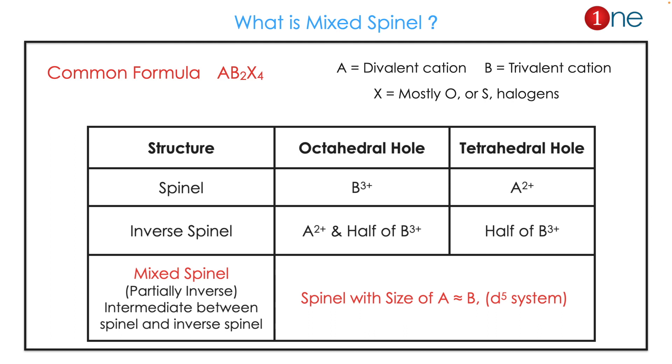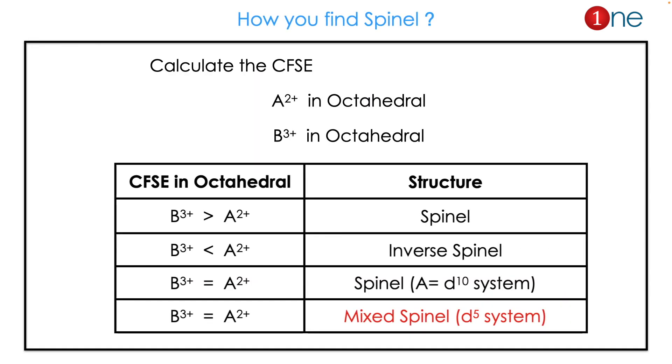The easy thing to identify spinel is the size of divalent equal to trivalent, mostly it's a d5 system. How to find spinel? First you have to calculate CFSE of divalent and trivalent cation in octahedral field.